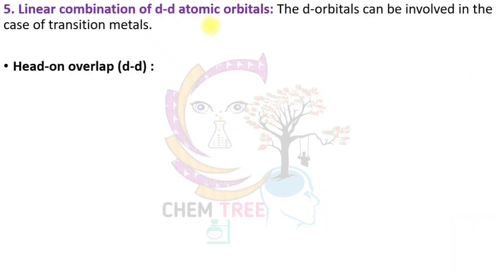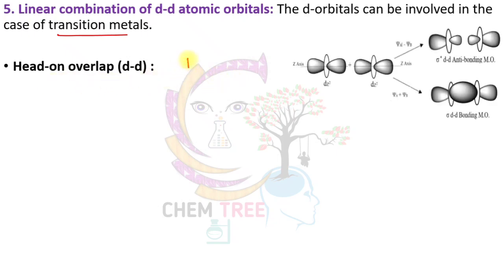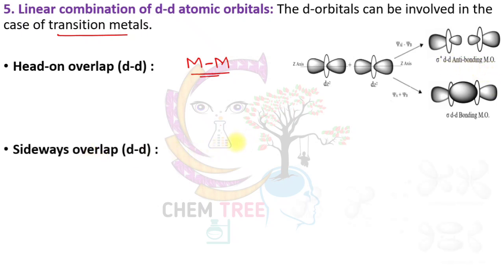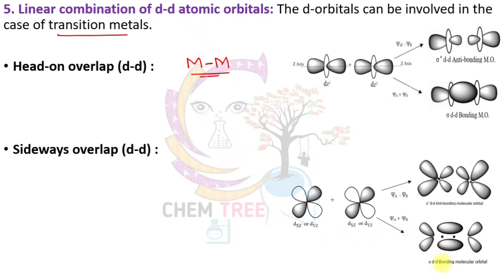Finally, d-d atomic orbital overlap is generally seen in transition metals. In head-on overlapping — for example in metal-metal bond formation — the orbitals overlap along the axis to form sigma and sigma star molecular orbitals. In sideways overlap, they form pi and pi star molecular orbitals.